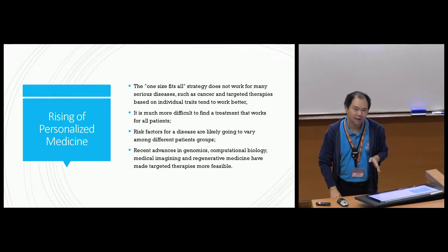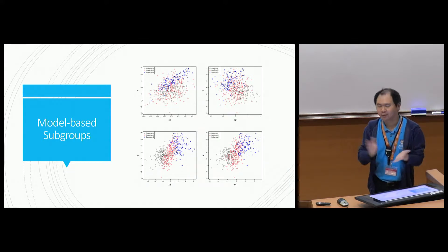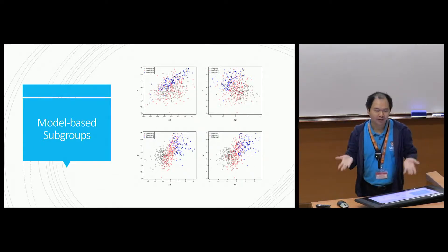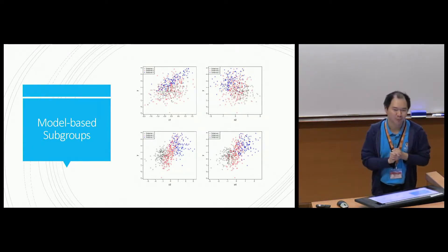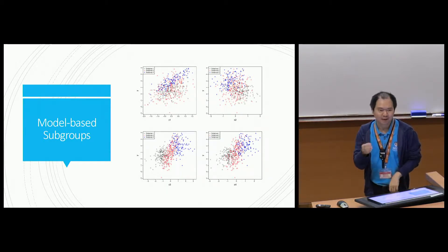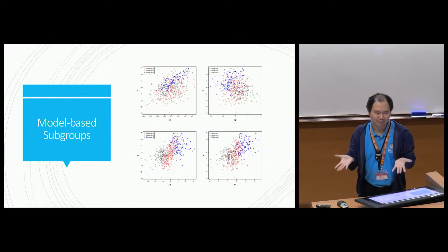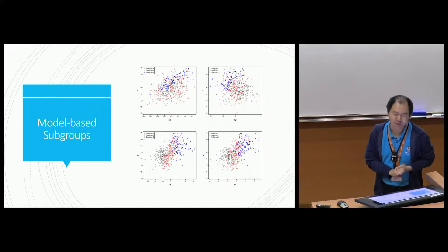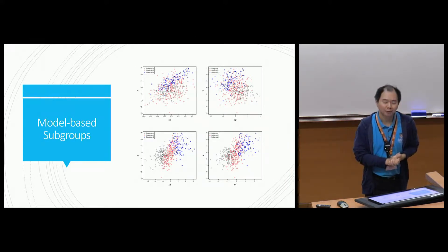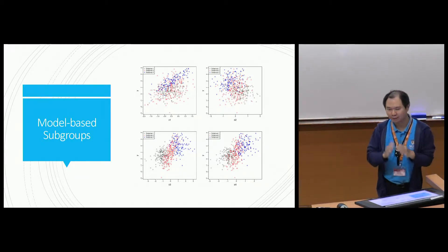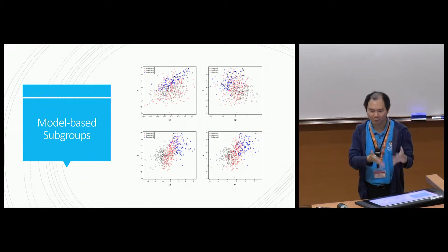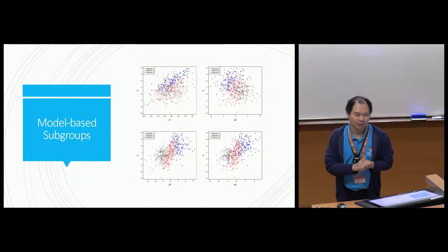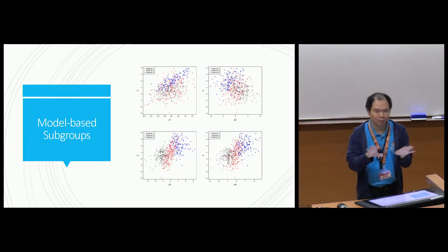If you can find the subgroups, you have found a meaningful way to do personalized medicine. Now, how do we find the subgroups? We need to identify the groups using the information we have — just the data collected in experiments or observational studies. We use a regression framework: we have a response Y, which is our outcome of interest, and a bunch of predictors x1, x2, up to xp. This is a usual regression setting.